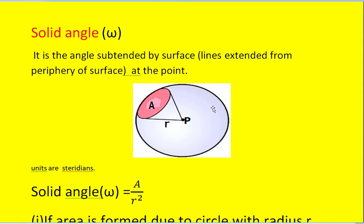Let me consider a sphere with radius R, and in that, let me consider a small area A. We have 360 degrees on the surface of the sphere. What is the meaning of this? How do we get these angles in relation to the center of the sphere? We need to know the definition of the plane angle, and what is the solid angle? Solid angle is the angle subtended by a surface area at a point P.